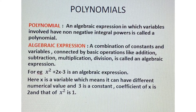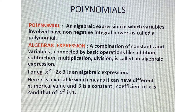Now let us see what is an algebraic expression. It is a combination of constants and variables which are connected by basic operations like addition, subtraction, multiplication, division, etc. For example, x² + 2x − 3 is an algebraic expression. Here x is a variable, 3 is a constant, coefficient of x is 2, and coefficient of x² is 1.